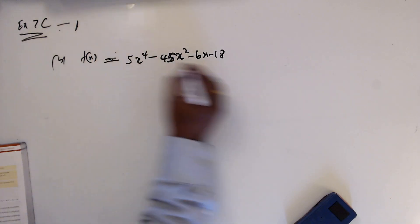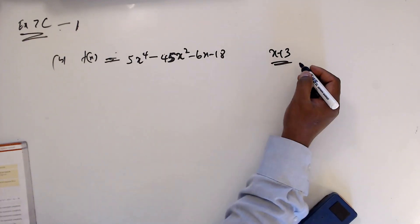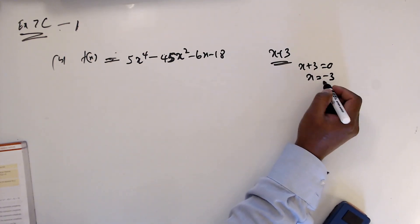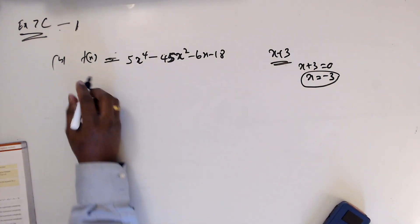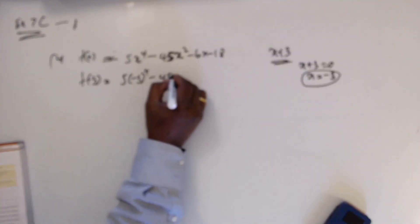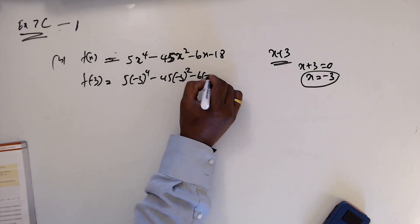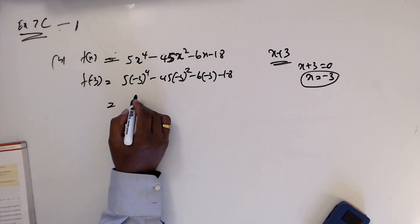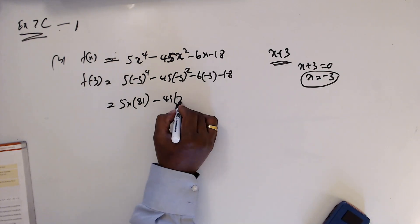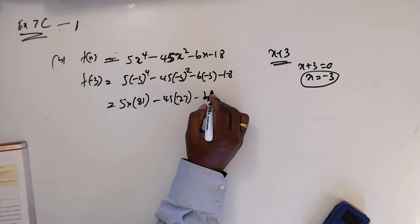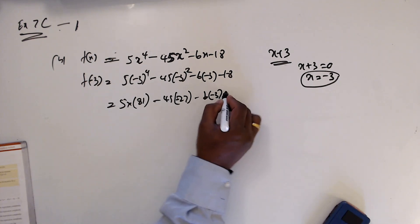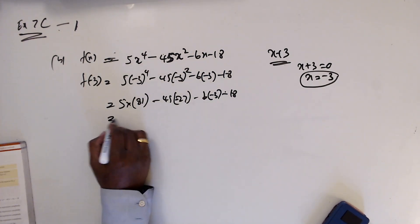Now part b: we want to show that x plus 3 is a factor. Setting x plus 3 equal to zero gives x equals minus 3. We substitute x equal minus 3. This gives 5 times 27, and then minus 27, minus 18, which equals zero.